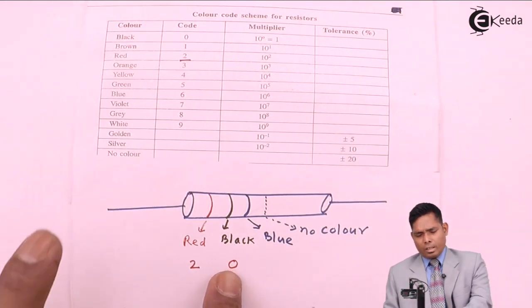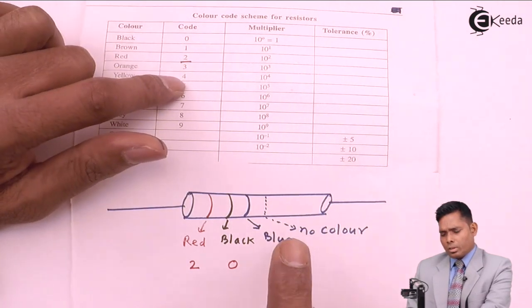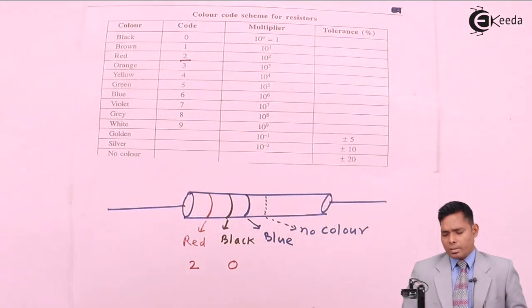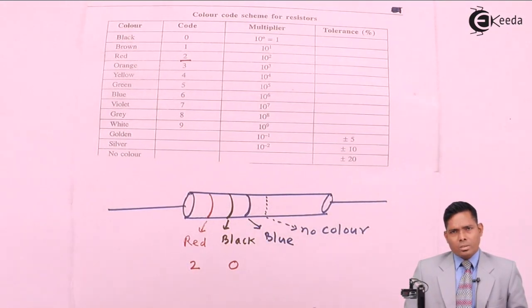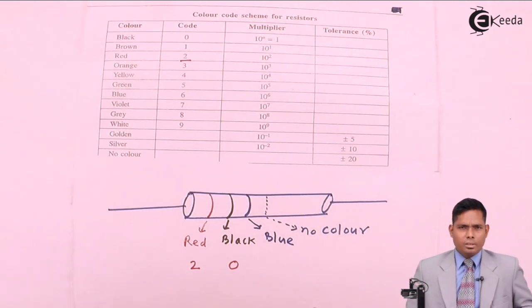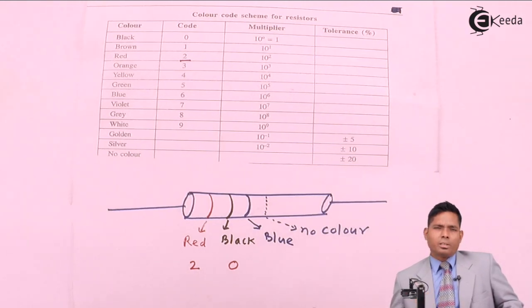First two colors are seen in this column. The third color is not seen in this column, the third color is seen in the next column, the multiplier. The fourth color is the tolerance. First two colors are the codes, the third color is the multiplier, and the fourth color is the tolerance.